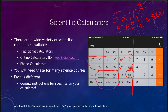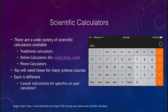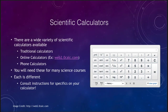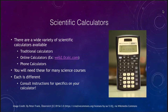Each of these calculators is different in how things are set up. On the iPhone calculator, the trig functions are at the bottom and the exponentiation functions are above them. On web2.0calc, the trigonometric functions are to the left and the exponentiation functions are in between. The TI calculator also has a different layout. How they are used can differ as well, so you will need to explore the specific calculator you are using.